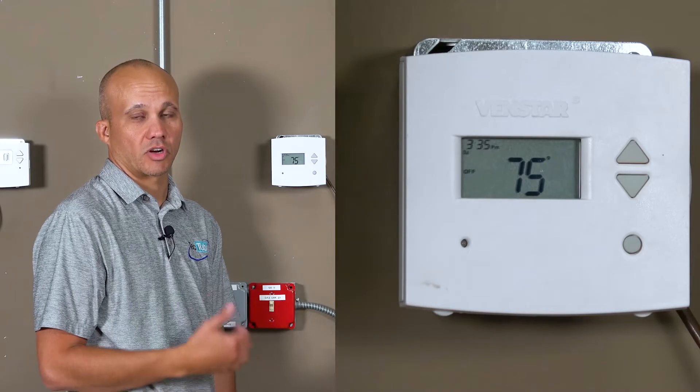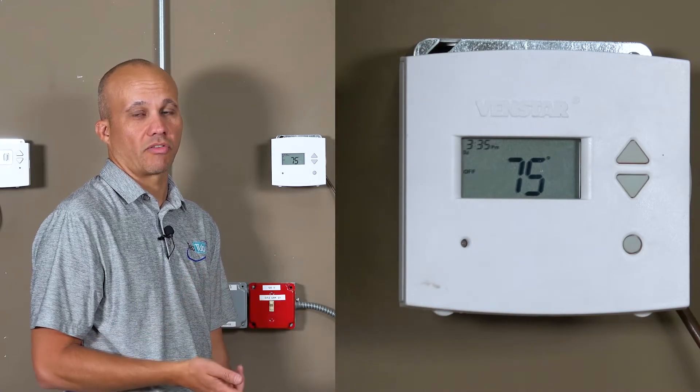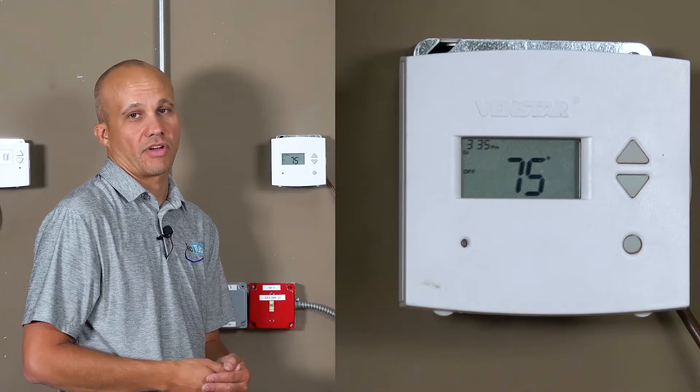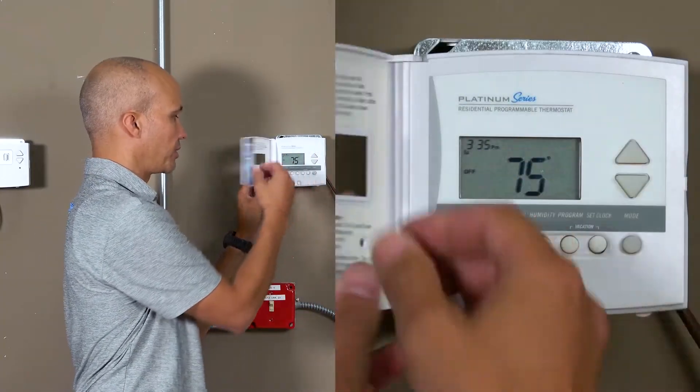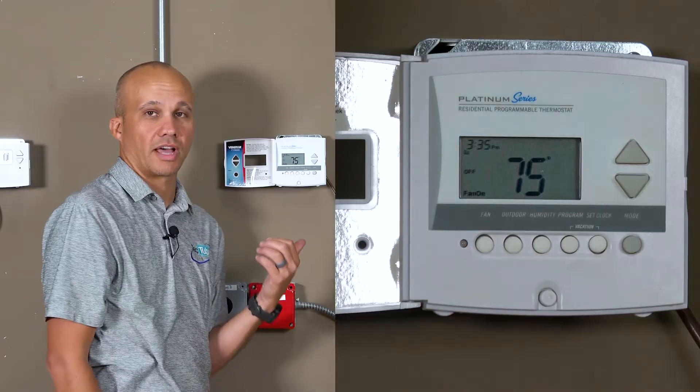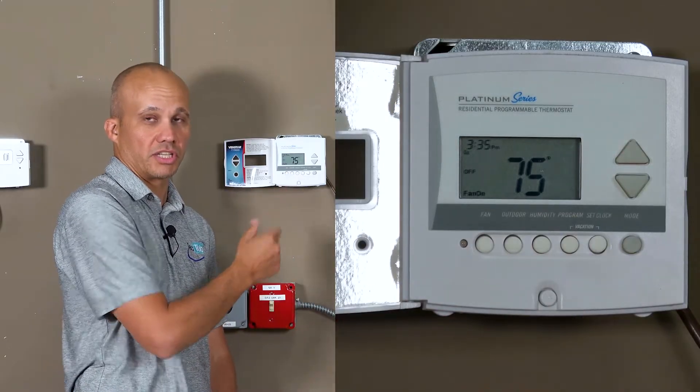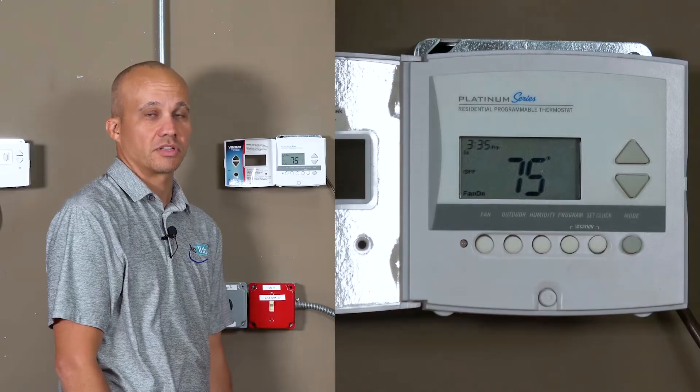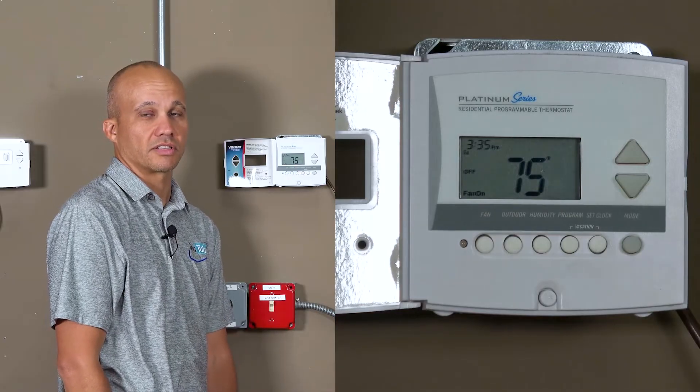Creating a call from the thermostat to request the equipment to provide heating, cooling, or fan depends on the kind of stat you have. In this particular case we open up the door and we simply press the fan on button and now the fan will turn on. So the thermostat just made the connection between R and G which energizes the fan upstairs. So we can go upstairs and see what our meter tells us up there.